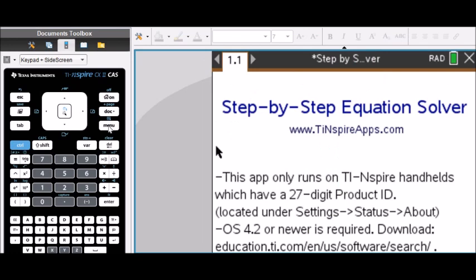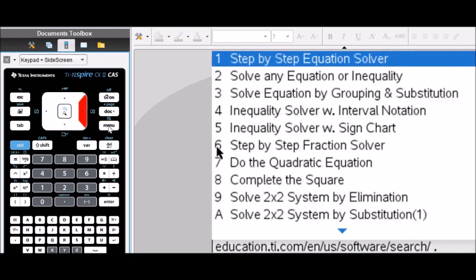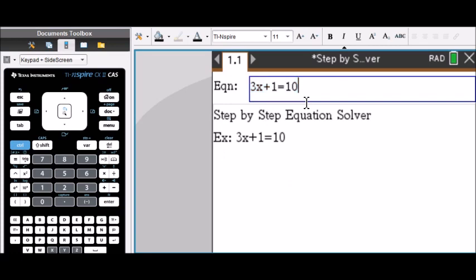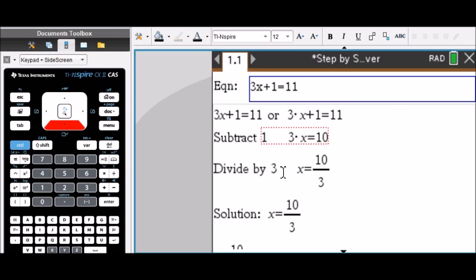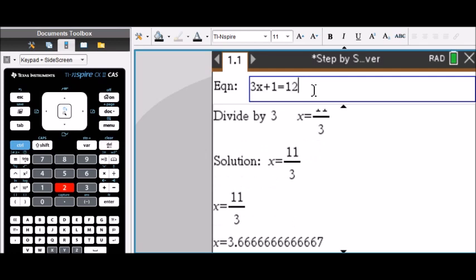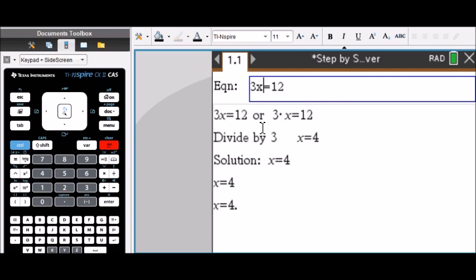Guess what? You can even solve any equation step-by-step using the step-by-step equation solver. Just type in any equation of your choice like this one. And the calculator will automatically solve the equation for you. Look here. Subtract 1 first. Then get this intermediate answer. Divide this by 3 and you're going to get 10 over 3.